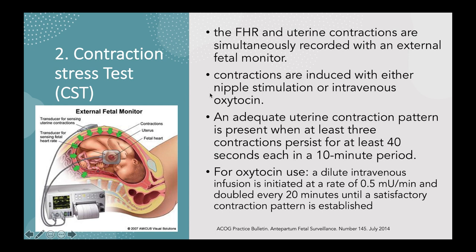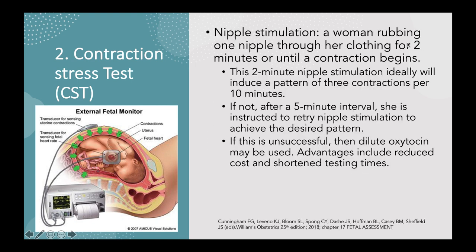Contractions are induced either with nipple stimulation or intravenous oxytocin. An adequate uterine contraction pattern requires at least three contractions lasting at least 40 seconds each in a 10-minute period. For oxytocin, a dilute IV infusion is initiated at 0.5 mU per minute and doubled every 20 minutes until a satisfactory contraction pattern is established. For nipple stimulation, the woman rubs one nipple through her clothing for two minutes or until a contraction begins, ideally inducing three contractions per 10 minutes. After a five-minute interval, she may retry if needed, or dilute oxytocin may be used. Advantages of nipple stimulation include reduced cost and shortened testing times.